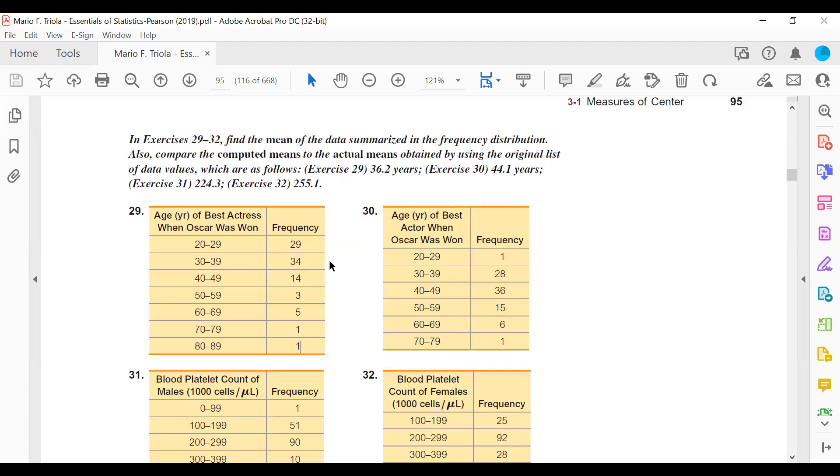So if we knew the original list of our data, we could actually add up all the data and then divide by however many numbers that we have. But here we don't. We just have a summary table of the data. So we don't know, for example, this 29 - I don't know what those numbers are. All we know is that there are 29 numbers that range between 20 and 29. So they could all be 20s, they could all be 29s, they could be scattered within 20 to 29. We don't know what those numbers are. So we have to find the mean a different way.